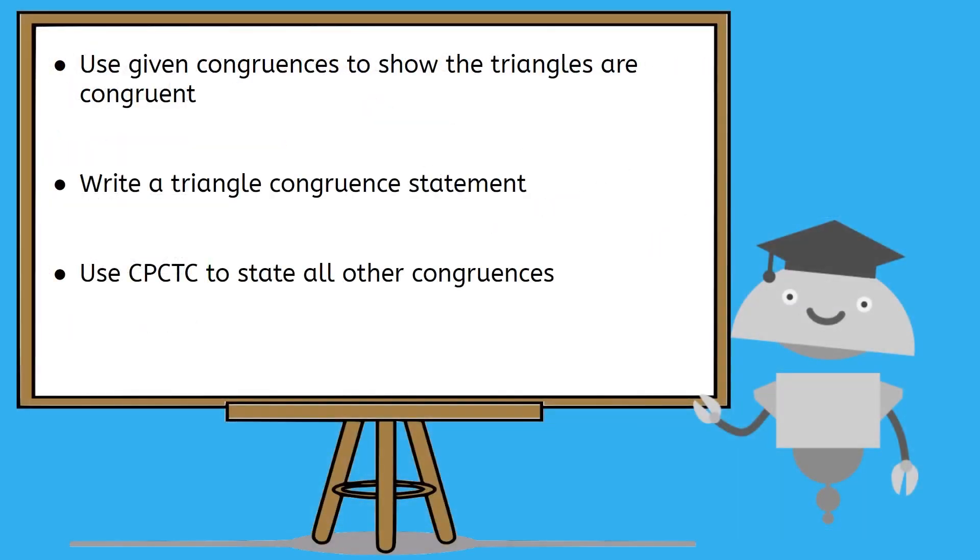Now you can use CPCTC to state parts that are congruent in two triangles. Remember that we only use CPCTC to state congruences that weren't already given to us in the picture, and we have to make sure the two triangles are actually congruent to each other first. All this new triangle knowledge is going to be so useful in upcoming units, so definitely make sure your understanding is strong before taking on that practice game. See you next time!